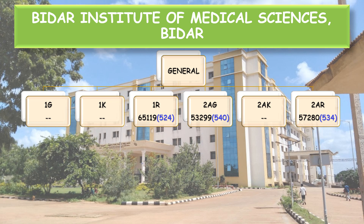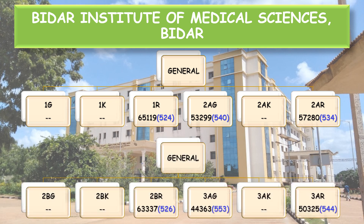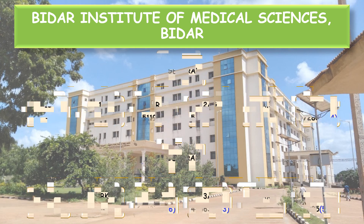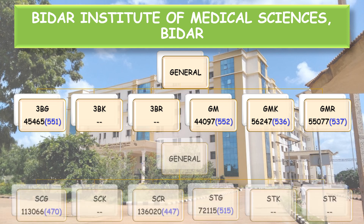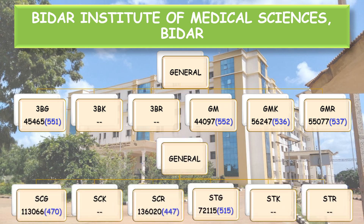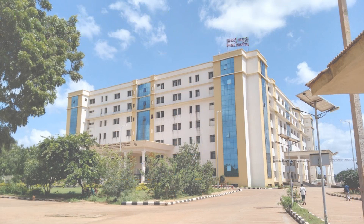State Quota category-wise cutoffs: 1R — All India Rank 65,119 corresponding to NEET Score 524, 2EAG — 540, 2AR — 534, 2BR — 526, 3AG — 553, 3AR — 544, 3BG — 551, General Merit — 552, General Merit Kannada Medium Study — 536, General Merit Rural Study — 537, SC General — 470, SC Rural — 447, and ST General — 515.